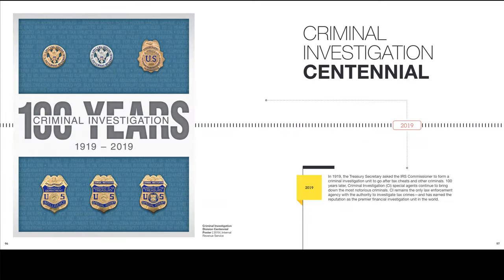Criminal Investigation Centennial: in 1919, the Treasury Secretary asked the IRS Commissioner to form a criminal investigation unit to go after tax cheats and other criminals. 100 years later, Criminal Investigation, or CI, special agents continue to bring down the most notorious criminals. CI remains the only law enforcement agency with the authority to investigate tax crimes and has earned the reputation as the premier financial investigation unit in the world.